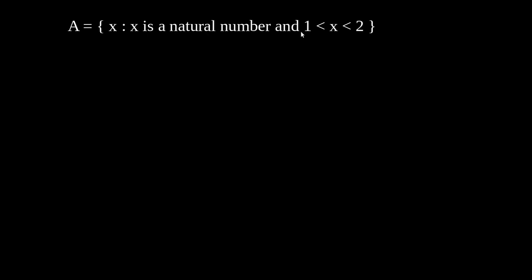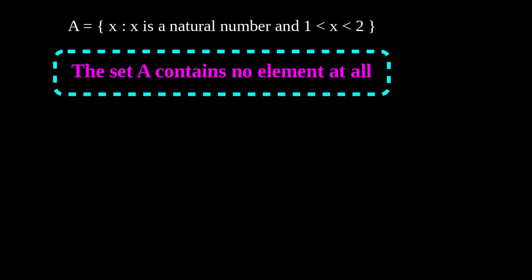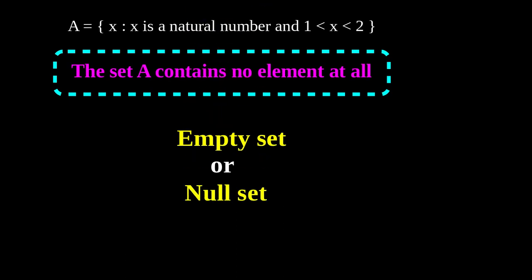The set of all natural numbers between 1 and 2 — we know that the natural number next to 1 is 2, and there is no natural number in between 1 and 2. It means that the set A contains no element at all, zero elements. Such sets are called empty sets, also known as null sets or void sets.